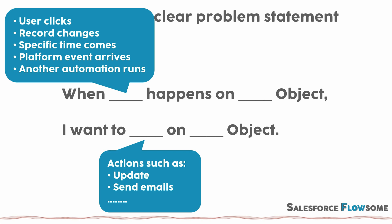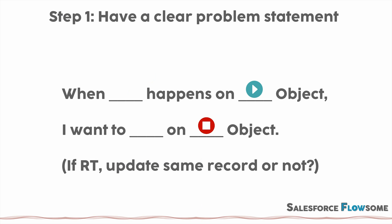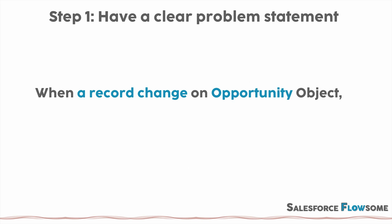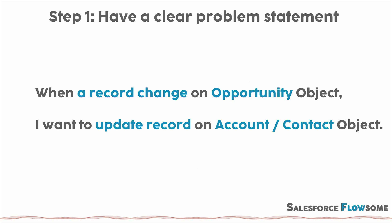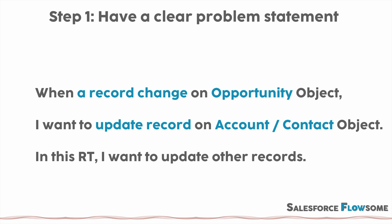And the blank after 'I want to' — you can fill in actions such as update records, send emails, and so on. The two blanks before the object will identify the start and end of the flow. An additional note: if it's a record trigger flow, do we want to update the same record or not? If we want to update the same record, we will use a before trigger. If not, we will use an after trigger. So for our business case: when a record changes on the opportunity object, I want to update records on the account and contact objects. Since we are updating other records than the triggering record, we are using an after trigger. The opportunity object will be the start, and account and contact will be the end.